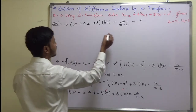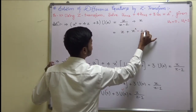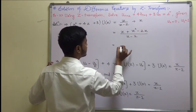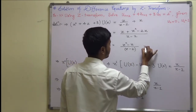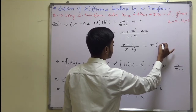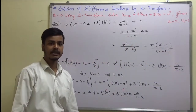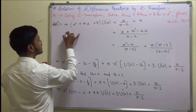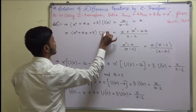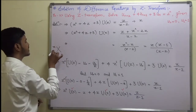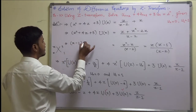So we have (z² + 4z + 3)·U(z) = z(z−1)/(z−2). Factoring the quadratic on the left: z² + 4z + 3 = (z+1)(z+3). Therefore: (z+1)(z+3)·U(z) = z(z−1)/(z−2).